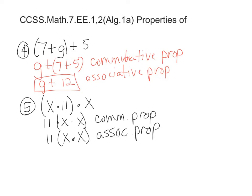Now we actually do it. Going inside here, x times x is x squared, times 11. The two properties we justified it with were commutative property and associative property. Simplify and justify. Thank you.